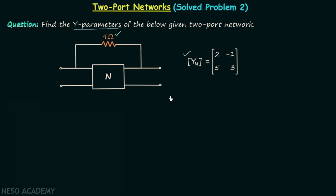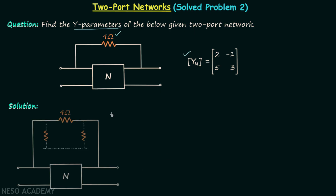Now we will understand how we can calculate the Y parameters of this 2-port network. The first thing we have to do is reconstruct this network. We can have a pi network when we have one single resistor, and the other two resistors in the pi network will have values of infinite ohms, representing open circuits. This is the input port with voltage V1, and this is the output port with voltage V2.